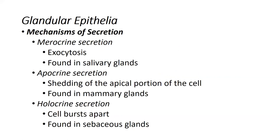The second type of secretion is apocrine secretion. As the prefix 'apo' implies, only the top part of the cell is released during this process. There's a shedding or rupturing of the apical-most part of the cell, and that is how those secretions are released. The example for this is typically the lactiferous glands, or mammary glands, or the breast.